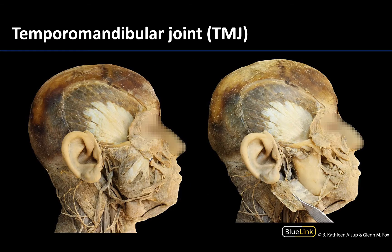Looking at the other structures associated with this region, this right here is your masseter muscle — one of your largest mastication muscles, located on the anterior side of the ramus of the mandible. Just posterior to it you can see the zygomatic arch, and this complex is part of the temporomandibular joint.